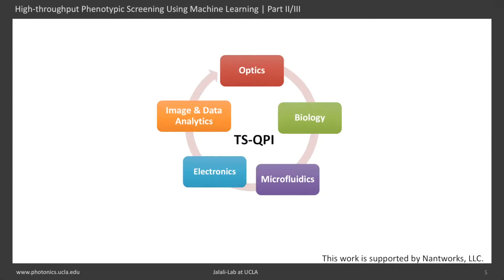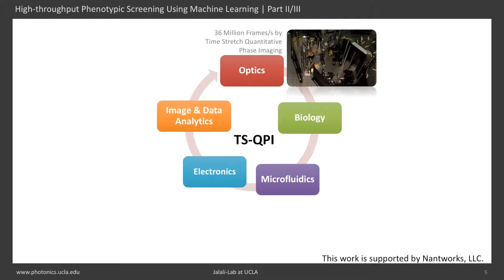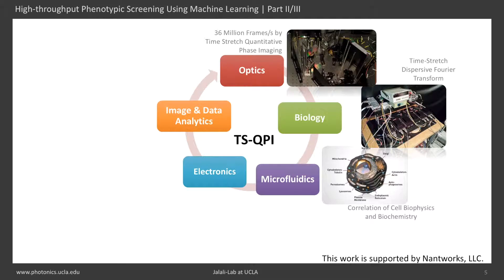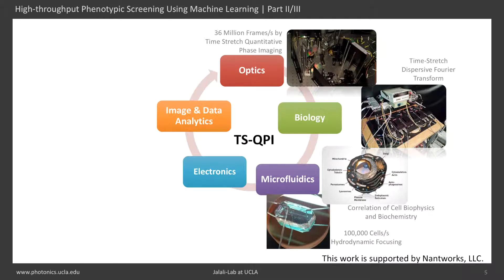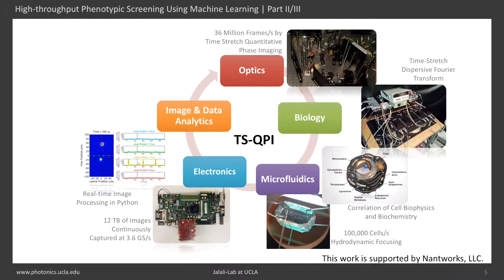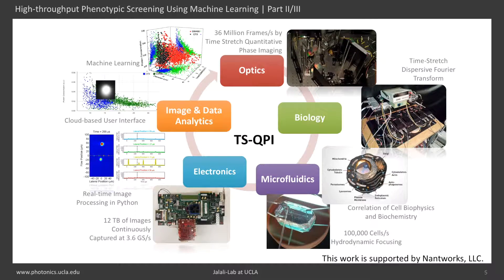High-throughput phenotypic screening requires multidisciplinary techniques. TSQPI covers optics, biology, microfluidics, electronics, and data analytics. Time-stretch quantitative phase imaging integrates machine learning with high-speed quantitative imaging, achieving record higher accuracy in label-free cell classification.